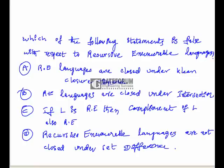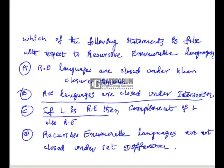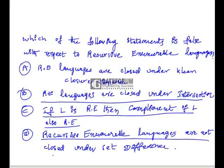Which of the following statements is false with respect to recursive enumerable languages? Option A: recursive enumerable languages are closed under Kleene closure. Option B: recursive enumerable languages are closed under intersection. Option C: if L is recursive enumerable then complement of L is also recursive enumerable. Option D: recursive enumerable languages are not closed under set difference.